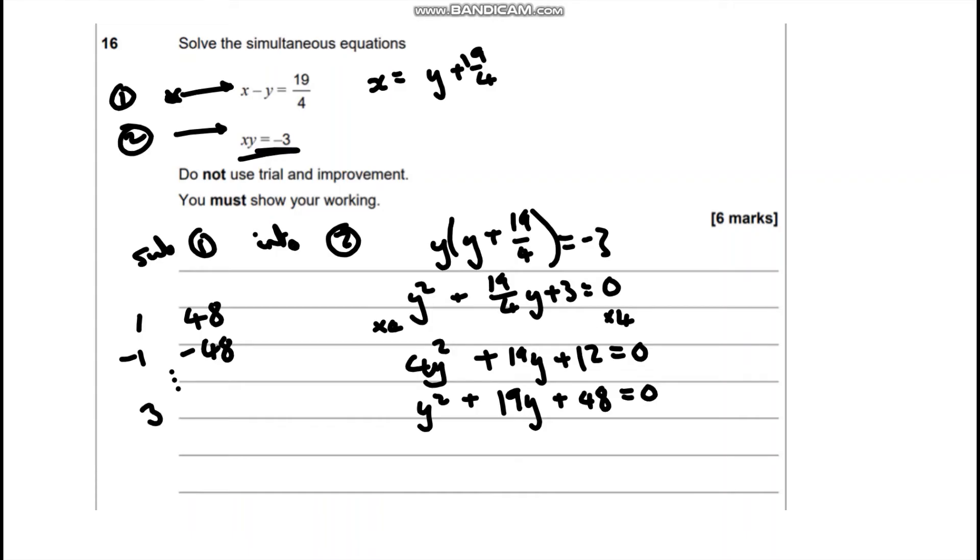But straight away I can see we've got 3 and 16. So inside my brackets, I'm going to put 4y plus 3, 4y plus 16.